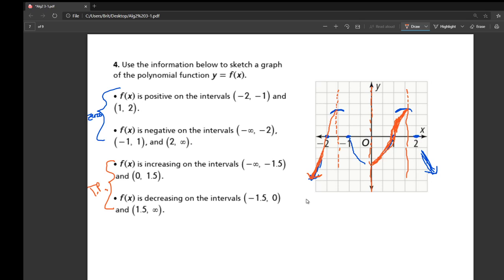And then it's decreasing from negative 1.5 to 0, which isn't a surprise based on the rest of the graph, right? And it's decreasing from 1.5 to infinity. And remember, it has to go through 2 because that's where our 0 is. So we have kind of a shape like that.